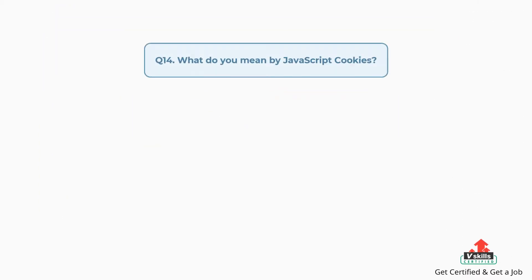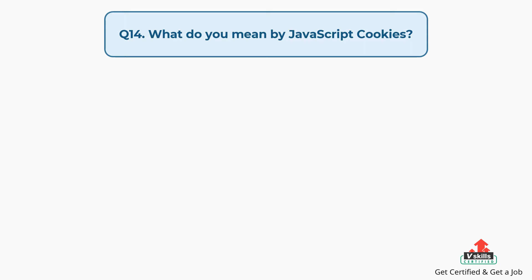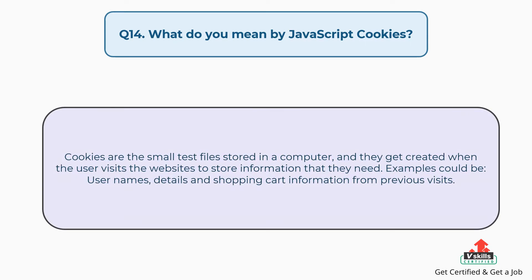Question number fourteen: what do you mean by JavaScript cookies? Cookies are small text files stored in a computer, and they get created when the user visits websites to store information that they need. Examples could be user names, details, and shopping cart information from previous visits.